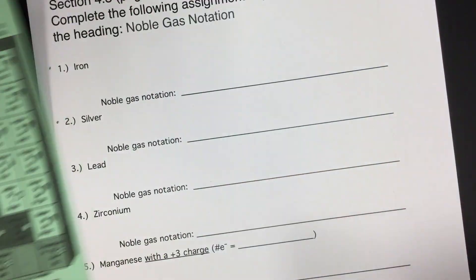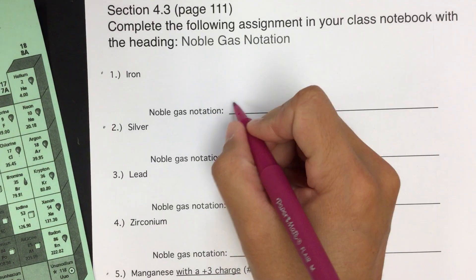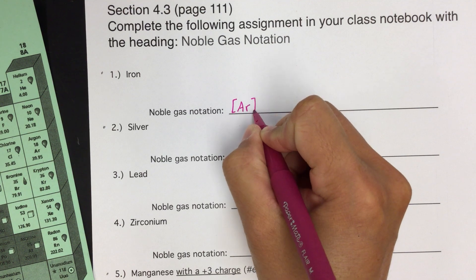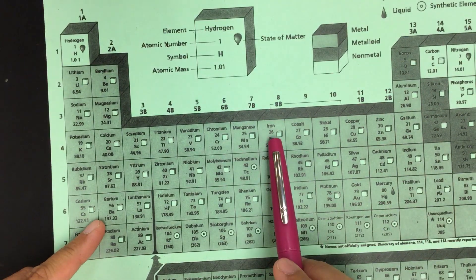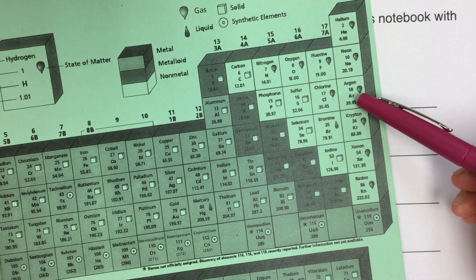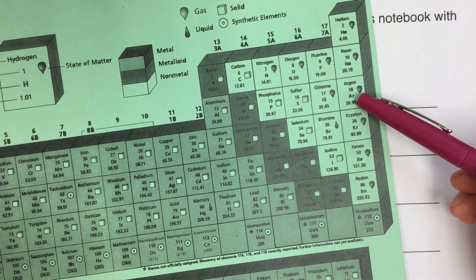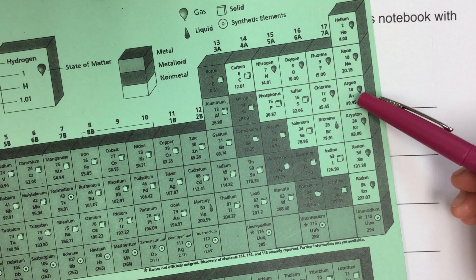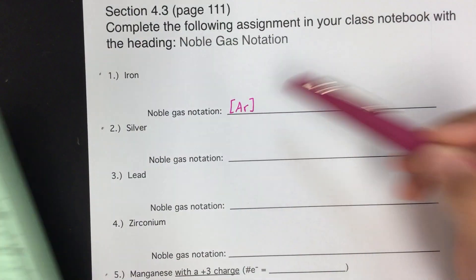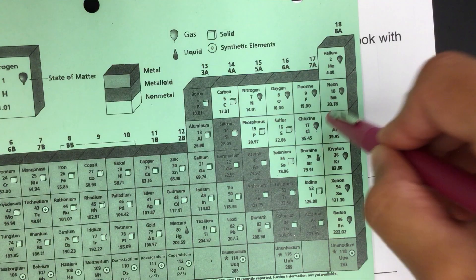So what we'll do is we'll put argon in brackets here to represent that if we're writing the electron configuration for iron, argon in brackets means everything else that was up here, electron configuration. So it represents 1s2, 2s2, 2p6, 3s2, 3p6, right?